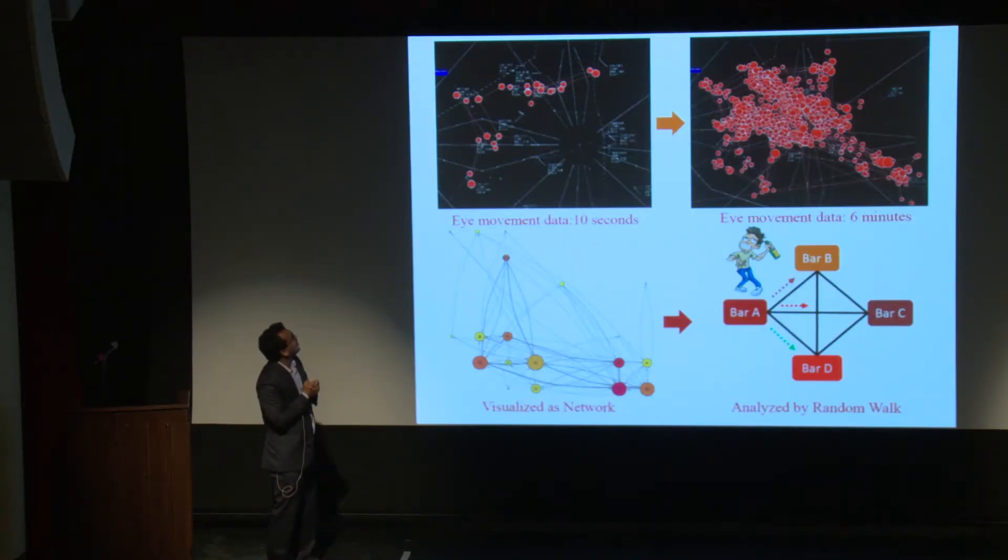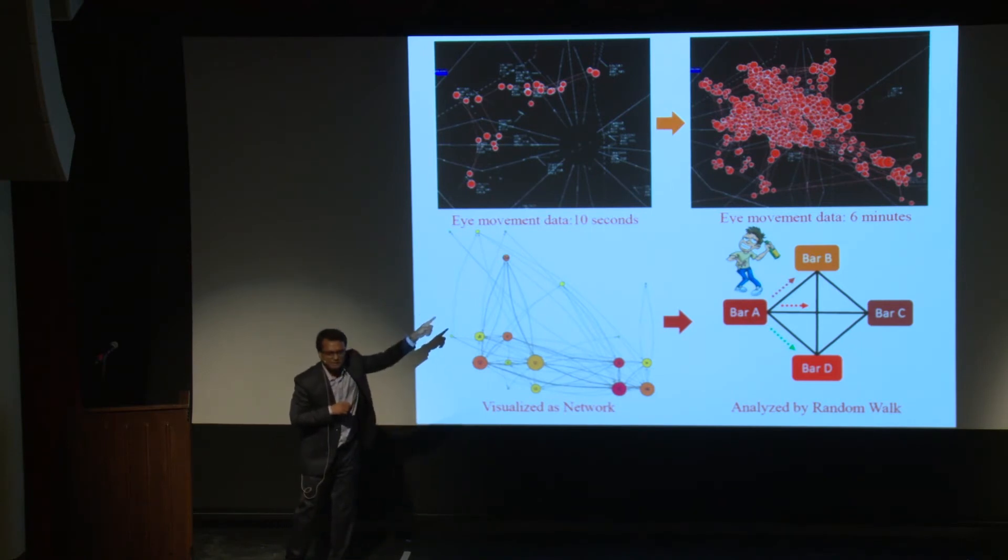As you can see on the top left picture, we have a typical radar screen which the controller uses, and those red dots show the eye movements. Now, it is easy to analyze such a small duration data. As we move for a longer duration on the top right, you see how messy it becomes?